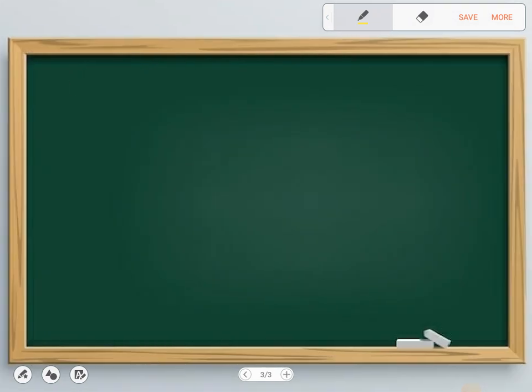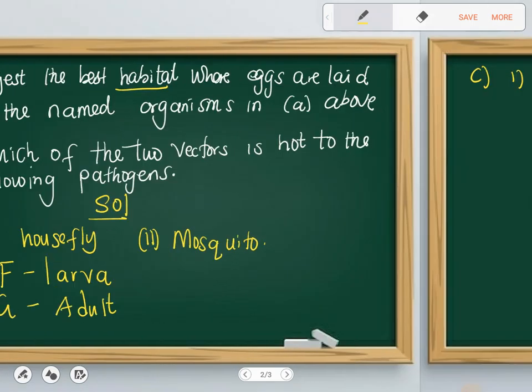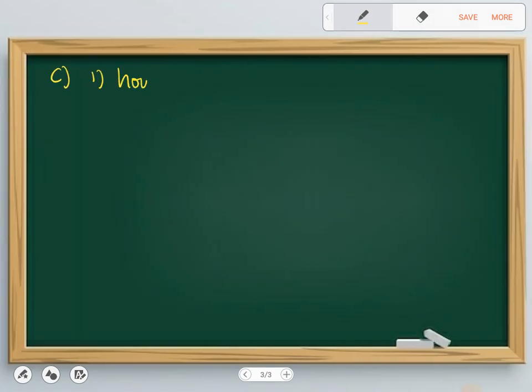So this is C. C one, which one was housefly? So a housefly lays eggs in decaying matter. That's where a housefly lays its eggs.